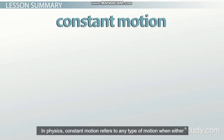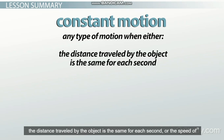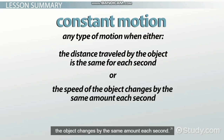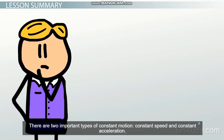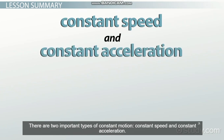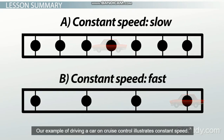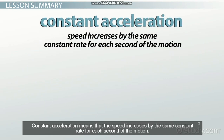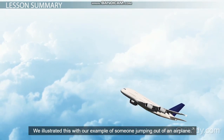In physics, constant motion refers to any type of motion when either the distance traveled by the object is the same for each second, or the speed of the object changes by the same amount each second. There are two important types of constant motion: constant speed and constant acceleration. Constant speed means the speed does not change at all for each second of the motion. Our example of driving a car on cruise control illustrates constant speed. Constant acceleration means that speed increases by the same constant rate for each second of the motion, illustrated by someone jumping out of an airplane.